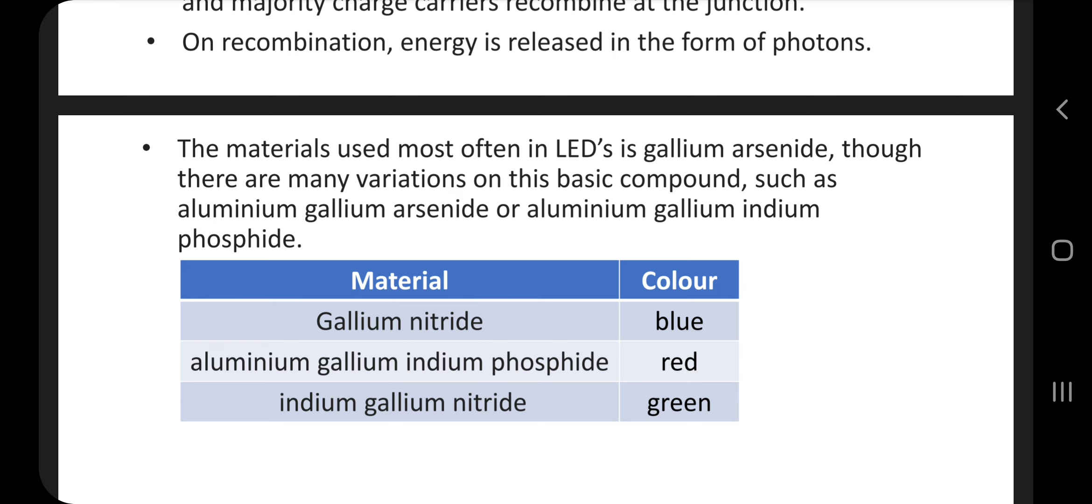The material used for various colors: for blue color we use gallium nitride, for red color aluminum gallium indium phosphide, and for green color we use the material indium gallium nitride. By heart this material.